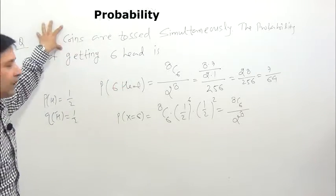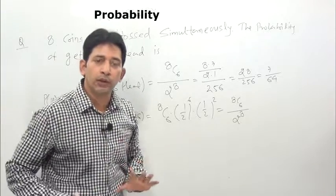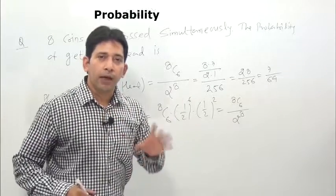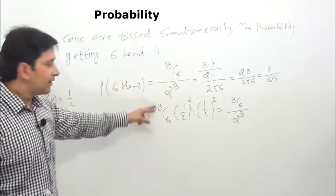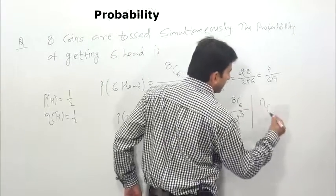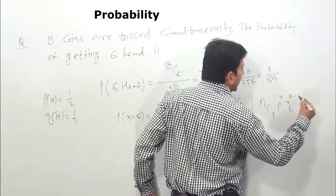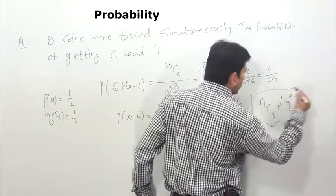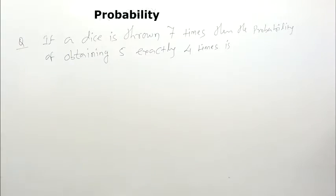So this is the basic concept: when the number of events is higher, we use Binomial Distribution. The formula uses the single-event probability of happening and not happening: nCr × p^r × q^(n−r). Just put the values in and solve.